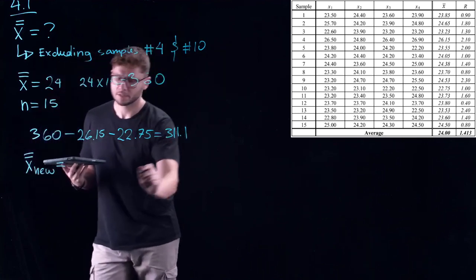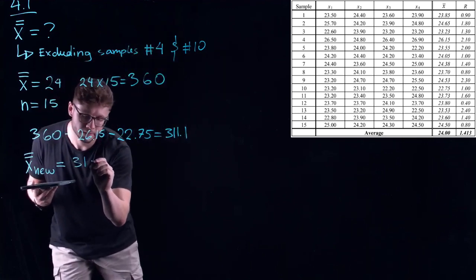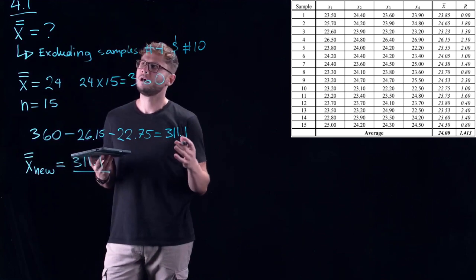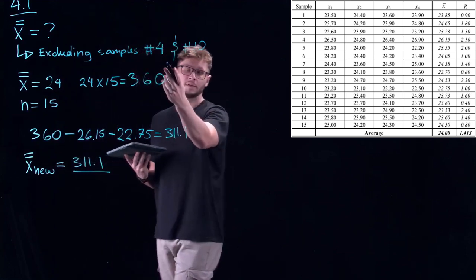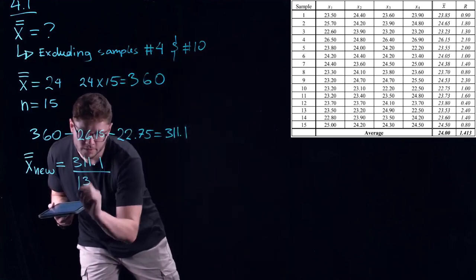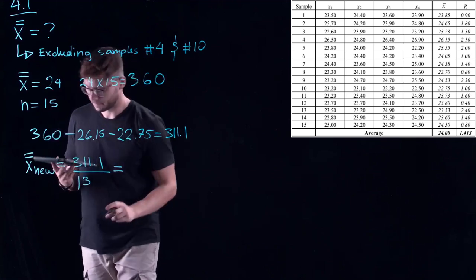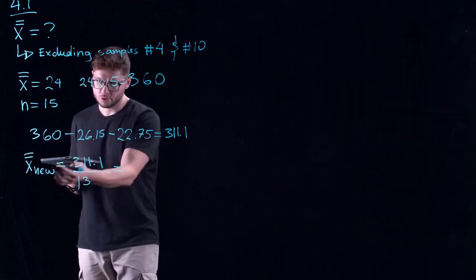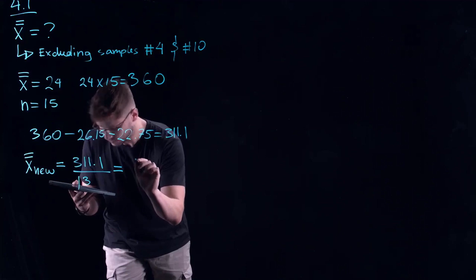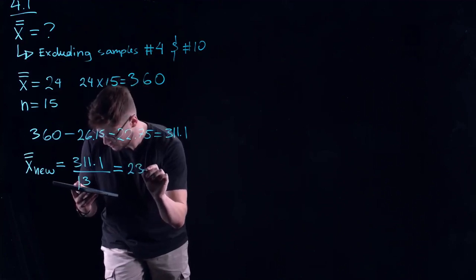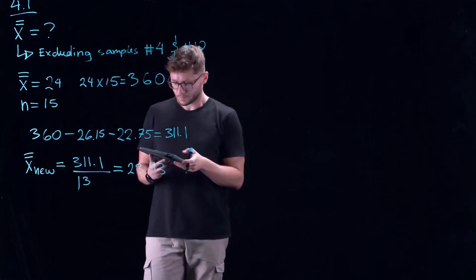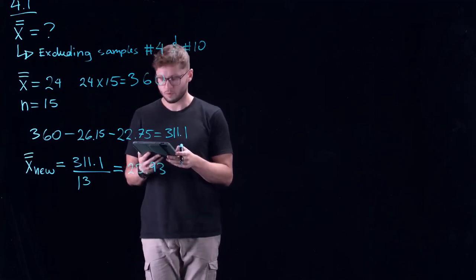To find our new average, our new x double bar, we're just going to take our new sum 311.1 and divide by our new subgroup amounts. Since we've removed two, sample 4 and sample 10, that's 15 minus 2, it's going to be 13. So if we divide, our new revised in control average is going to be 23.93.